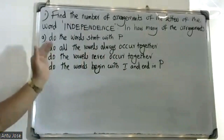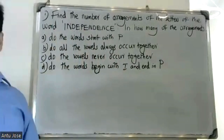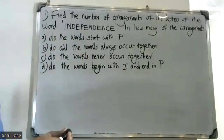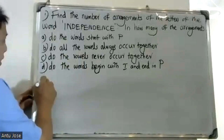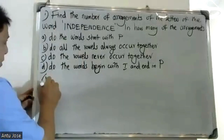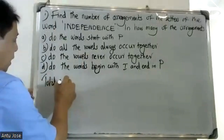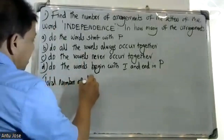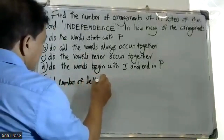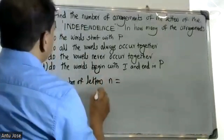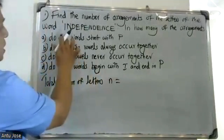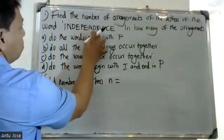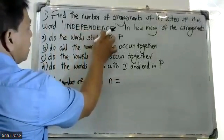Find the number of arrangements of the letters of the word INDEPENDENCE. Total number of letters: N is equal to 1, 2, 3, 4, 5, 6, 7, 8, 9, 10 — so the total number of letters is 12.